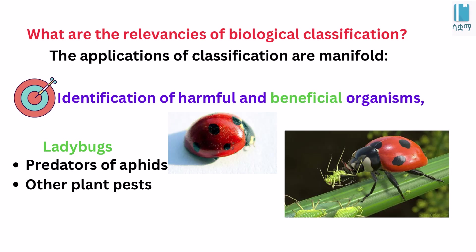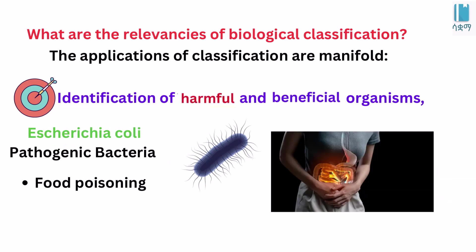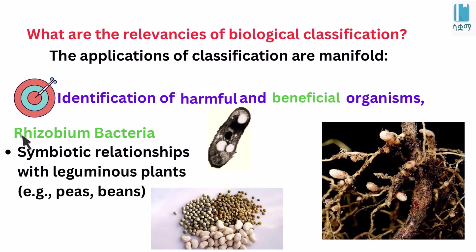Biological classification is a good source. There are bacteria that get into food. These bacteria are involved in a symbiotic relationship with plants.